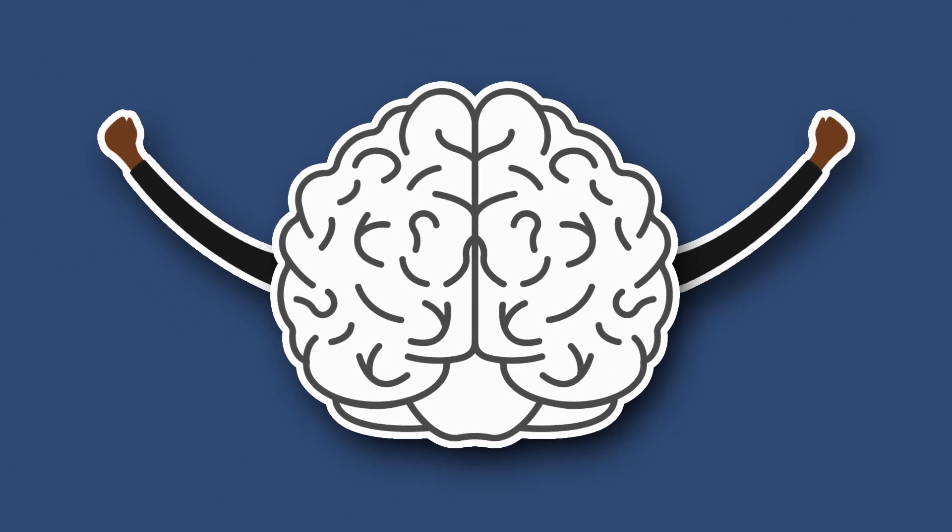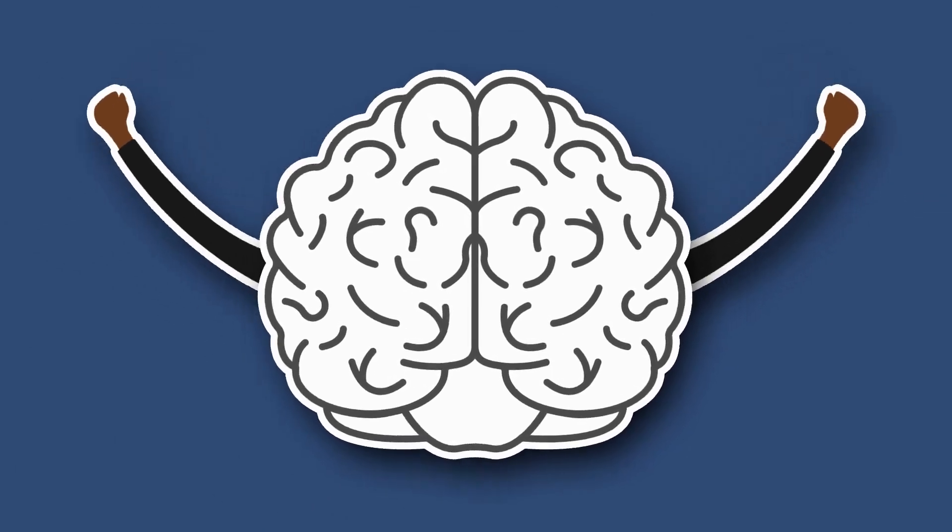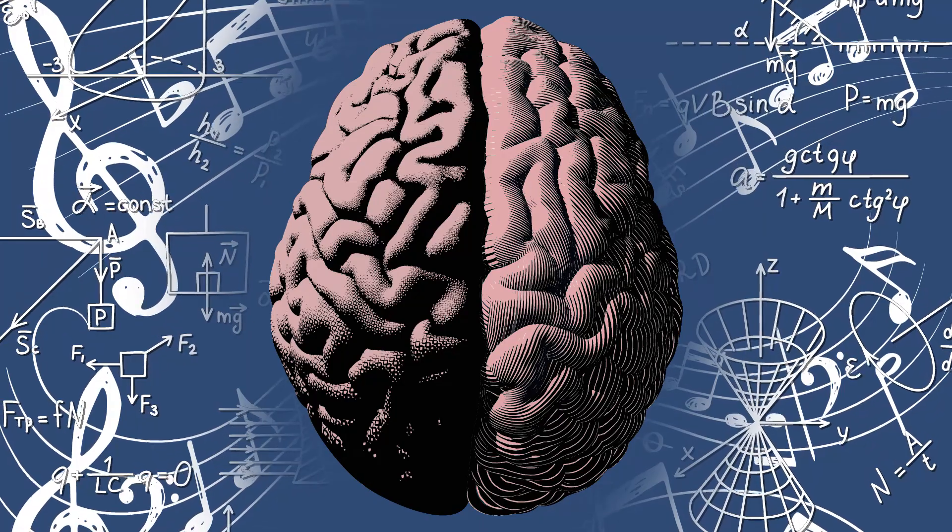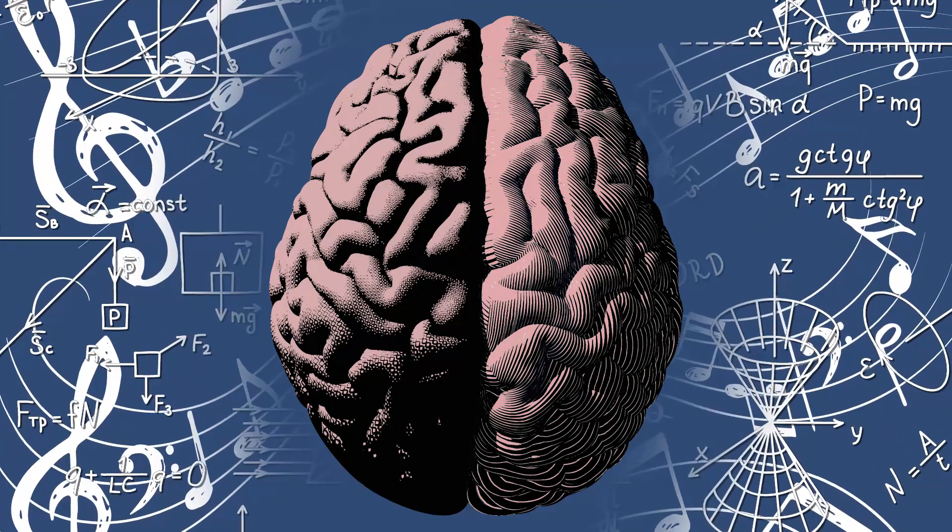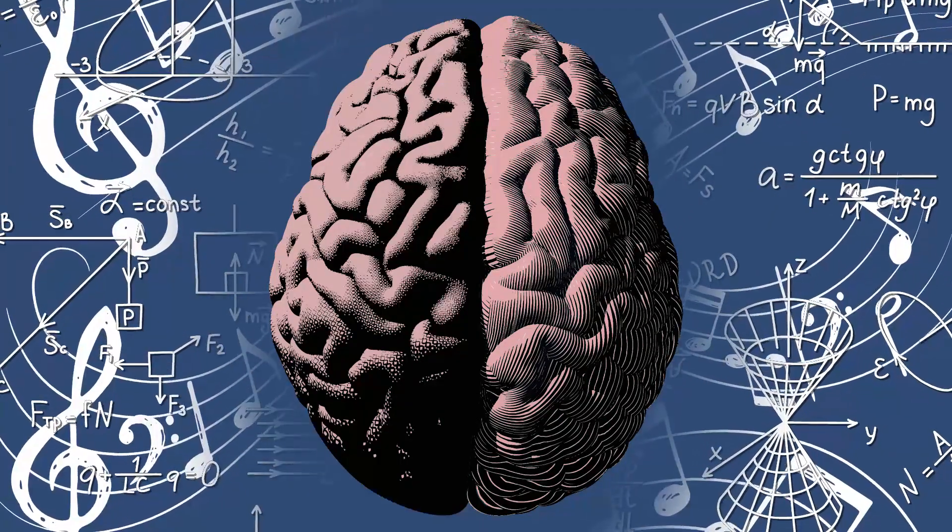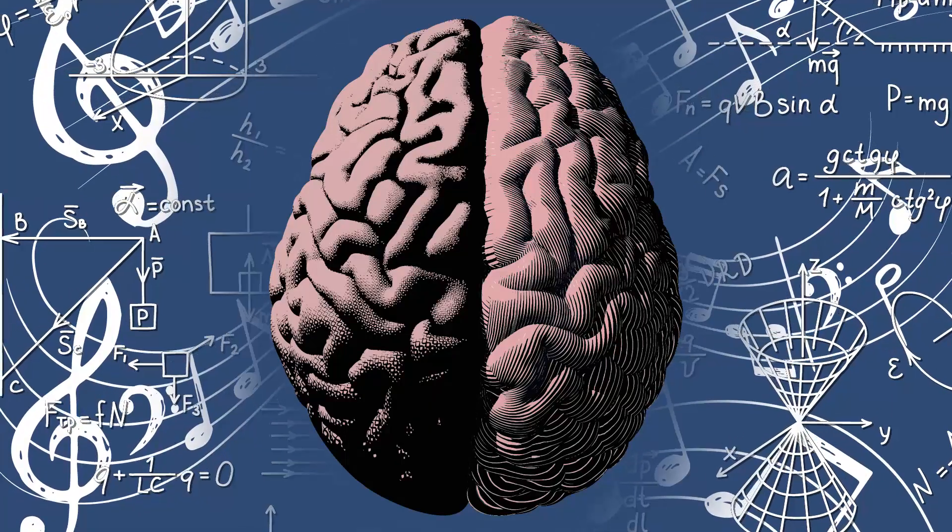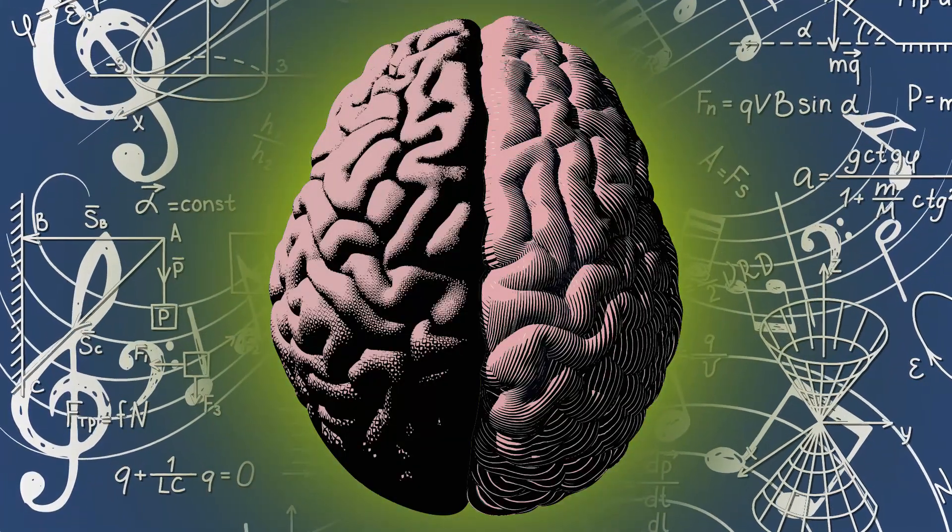But overall, we use both sides of our brains equally. Whether you're making music or doing math, the left and right hemispheres work together, and personality traits like creativity or analytical thinking involve the entire brain, not just one side of it.